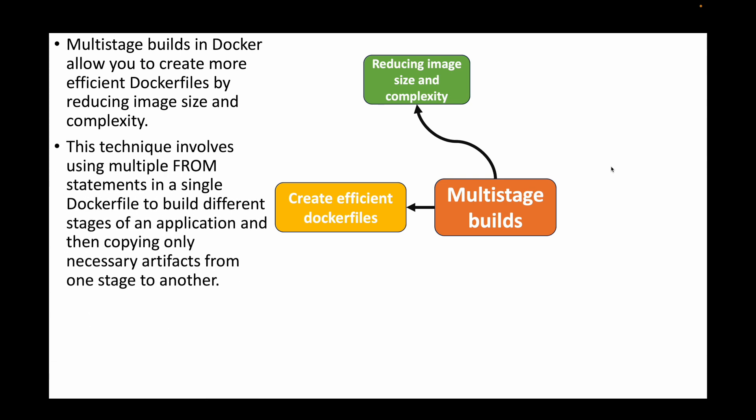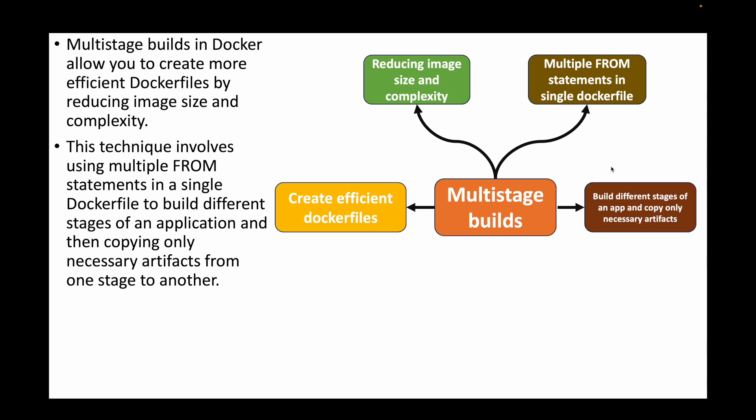Essentially, what we do in a multi-stage build is create multiple FROM instructions within a single Dockerfile. Each stage does different things — it could be for building your application and then copying those artifacts from one stage to another. For example, with three stages: stage one does something, you copy artifacts to stage two, then from stage two to stage three, building different parts and copying only the necessary artifacts.